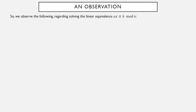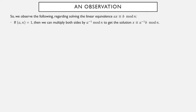So observe the following regarding solving linear equivalences in one variable. a, b, and n are all given — a and b are any integers, n is a positive integer — and x is the variable. We want to find solutions to ax ≡ b modulo n. If a and n are relatively prime, then we can multiply both sides by a inverse modulo n to get x ≡ a inverse times b mod n.